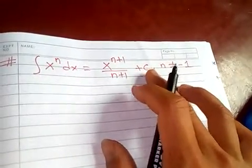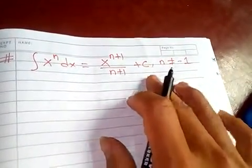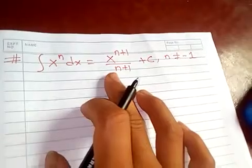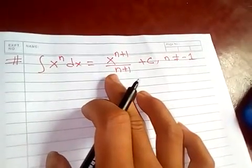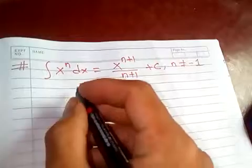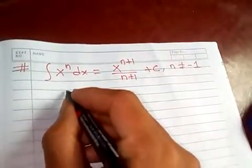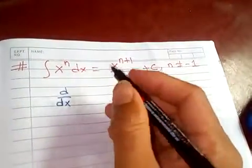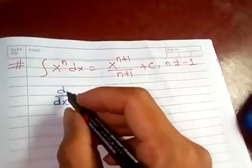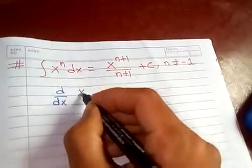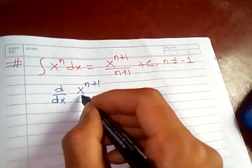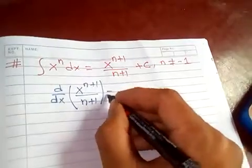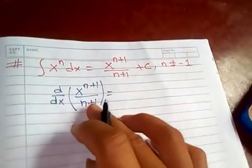Since we know that integration and derivatives are inverse or opposite of each other, in order to prove this formula, I'm going to consider the derivative. Because they are inverse of each other, I'm going to take the derivative of this one: x to the n plus one over n plus one.